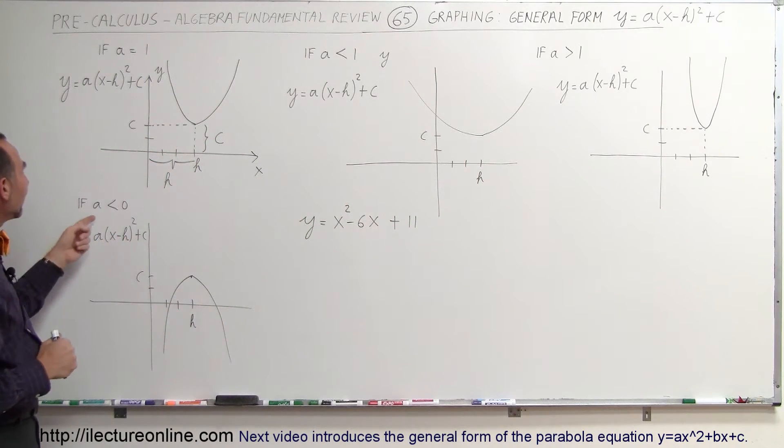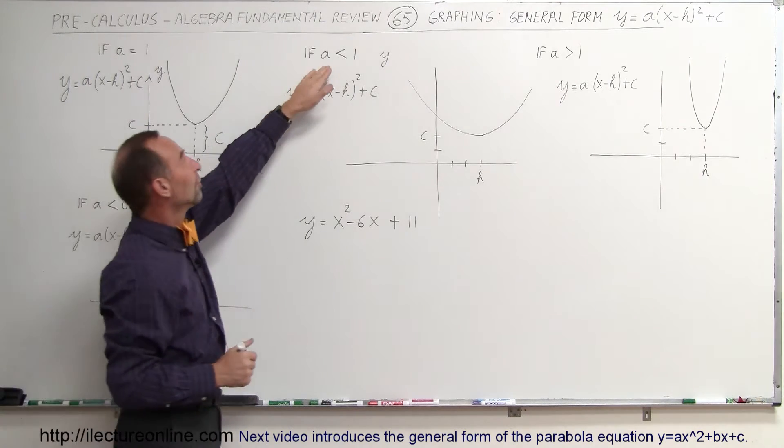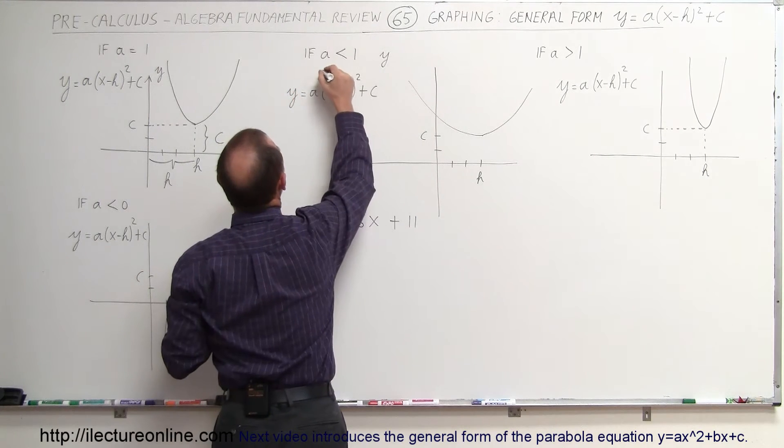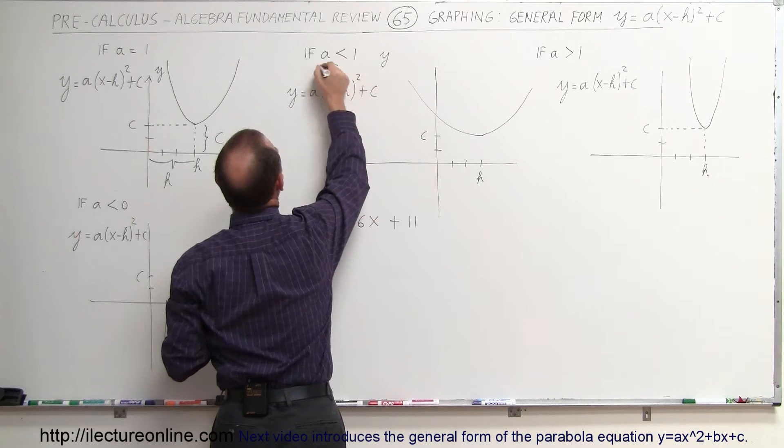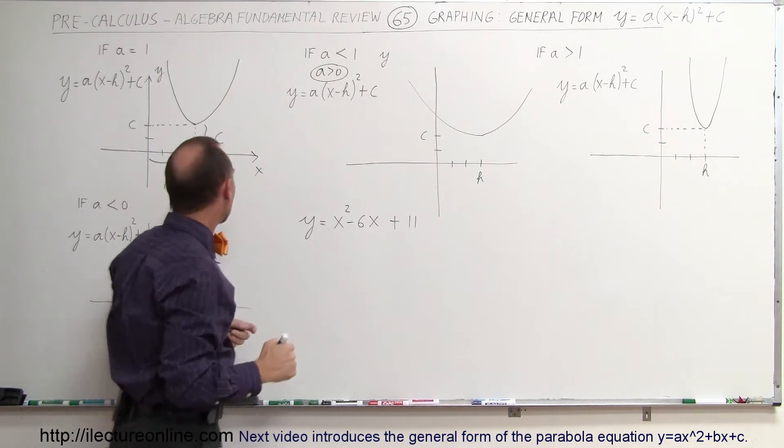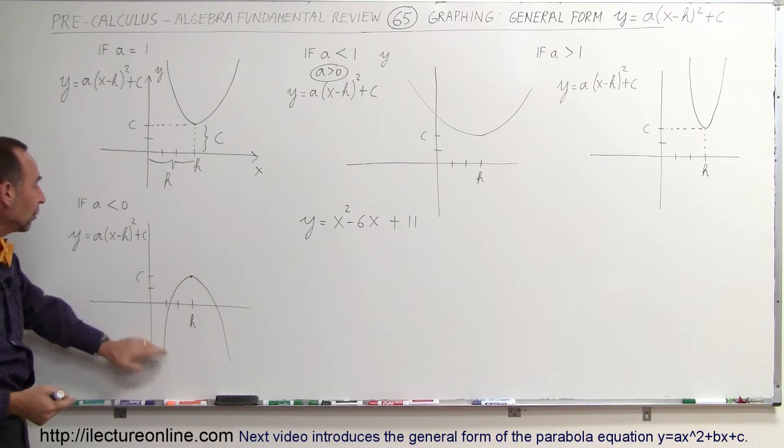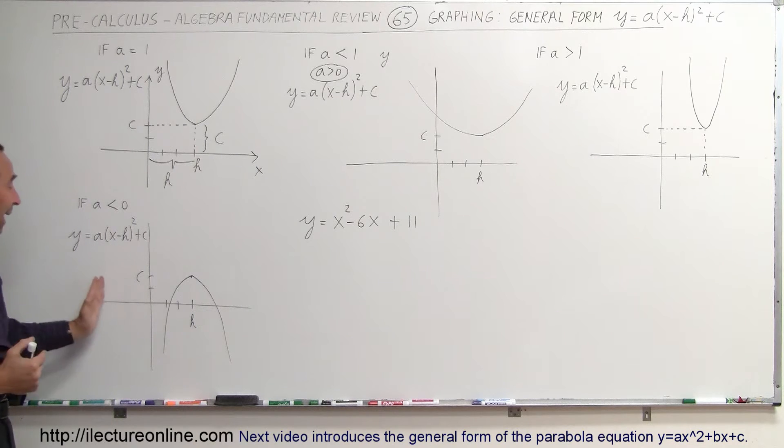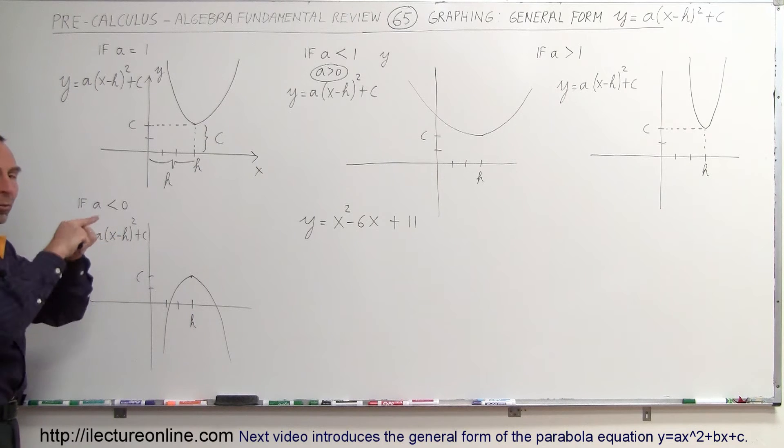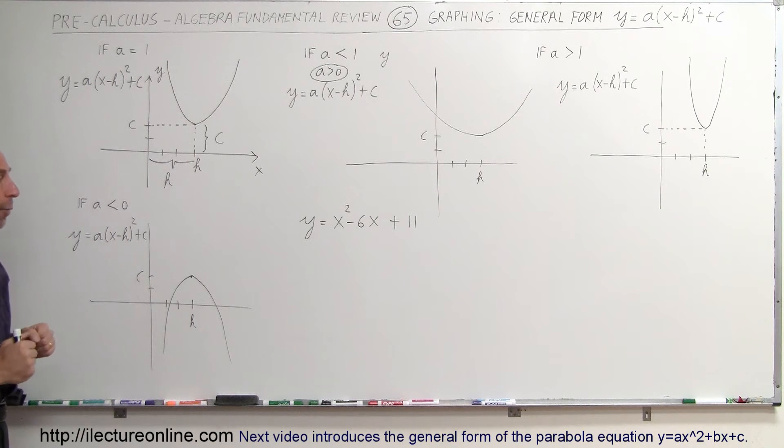What if a is less than 0? If we write a is less than 1 but a is greater than 0, we want to make sure that's included. But what if a is less than 0, if it becomes a negative number? It simply flips the graph over, the parabola over, and now we point it downward. The shift is still the same: h units to the right, c units up, but now the parabola will be angled downward.